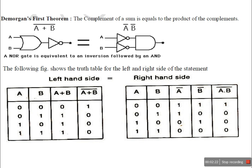This is the proof. The truth table proves that a NOR gate is equal to an inversion followed by an AND. A NOR gate is equal to an OR followed by a NOT. The two are the same — inversion followed by an AND.